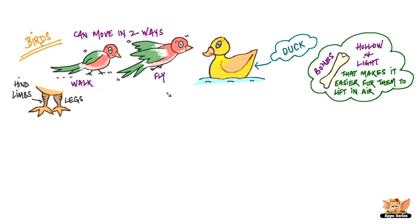Their hind limbs are modified as legs that help them walk. Their forelimbs are modified as wings. They have strong muscles along their breast bones that help the wings move up and down.